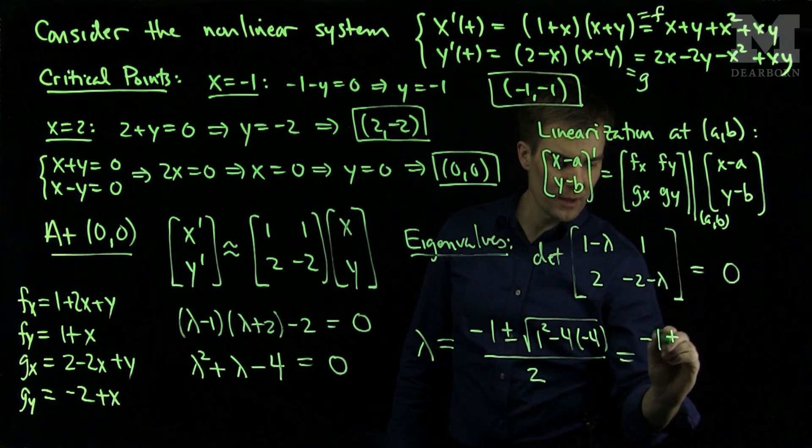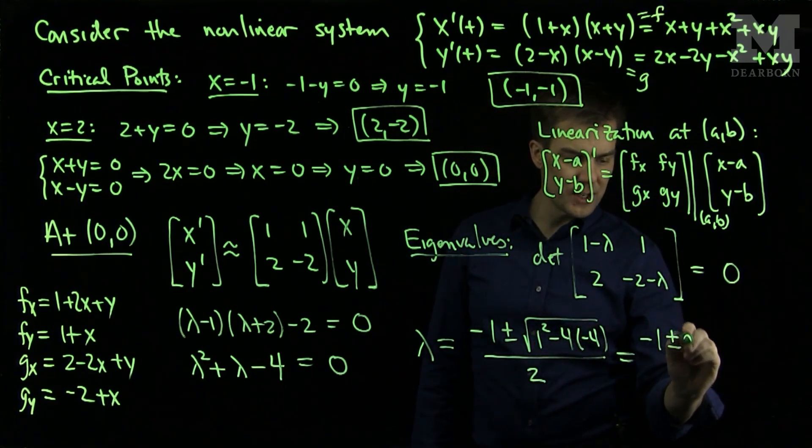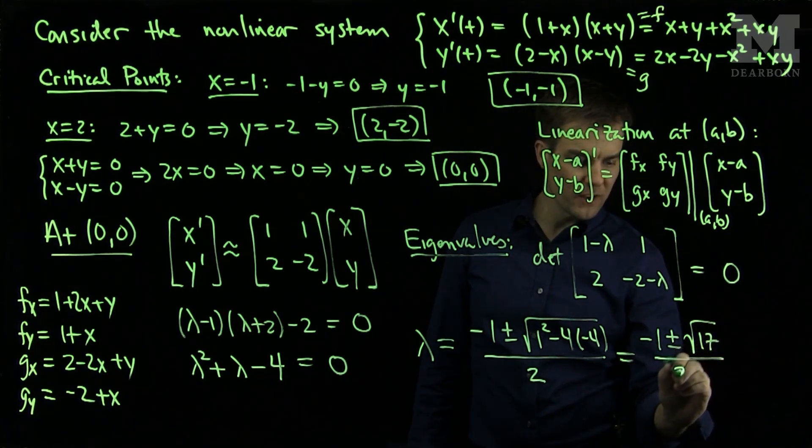If we simplify this, I have negative 1 plus or minus—I have 1 plus 16—1 plus 16 is the square root of 17, all divided by 2.